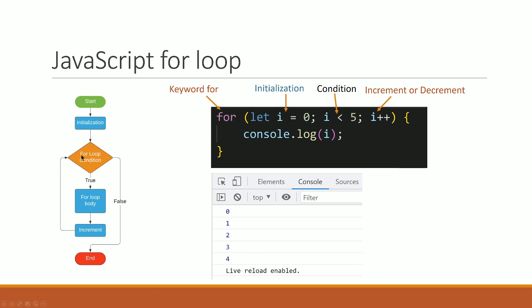When looking at the condition check: i equals 0, condition is checked — is 0 less than 5? True. So console.log prints 0. Then it is incremented by one, making i equal to 1.